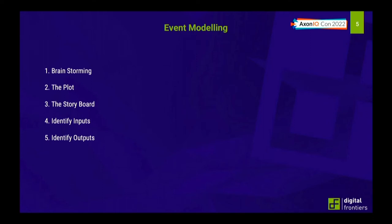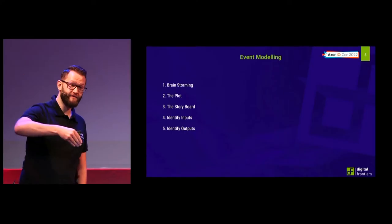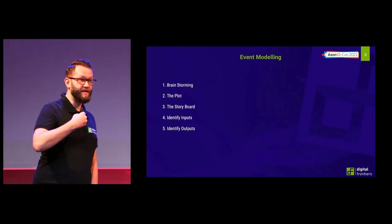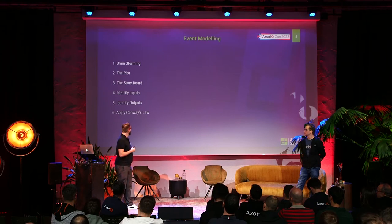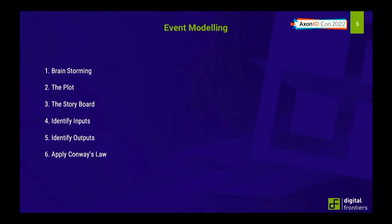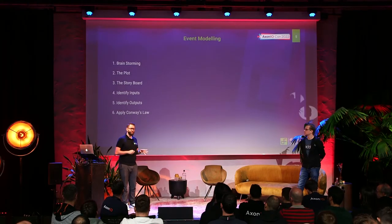Once you have a story and a vague understanding of how it will look, you identify inputs and outputs. Inputs and outputs for us are commands and projections — what goes into the system to manipulate things, and what is the outcome. Step six has an interesting name: apply Conway's law. The structure of your software will resemble the structure of your company. By identifying things that are close together, you can determine what should be implemented by the same team, and in Axon terms you might identify an aggregate.